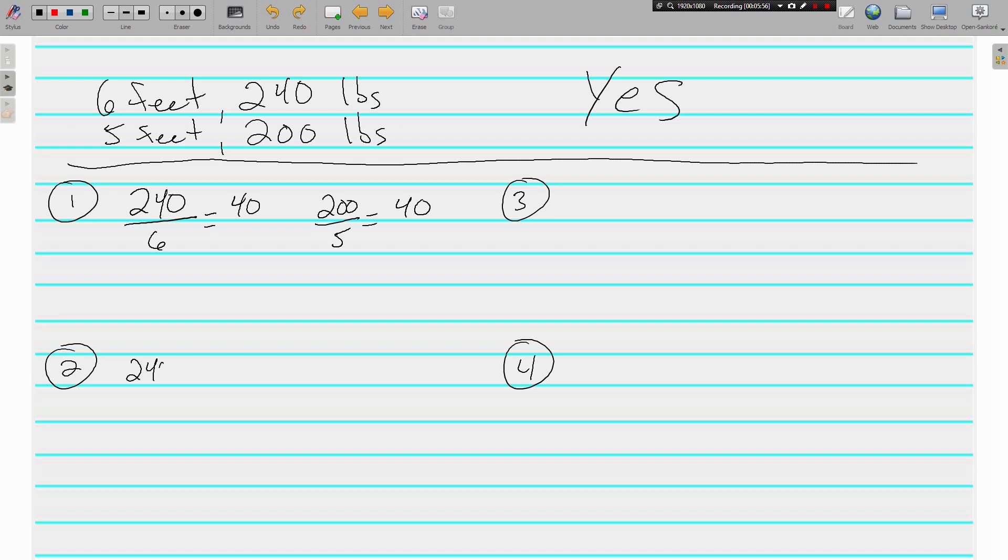Reducing. 240 over 6 and 200 over 5. 6 goes into both of these numbers 40 times and 1 time. And 5 goes into both of these numbers 40 times and 1 time. So when they are reduced, they are both the same thing. So, yes.